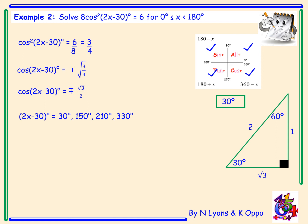However, these are the solutions to 2x minus 30. We next add 30 to each of the angles to get 60, 180, 240, and 360 — and that's for 2x.